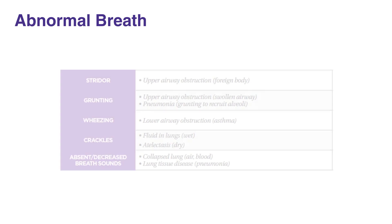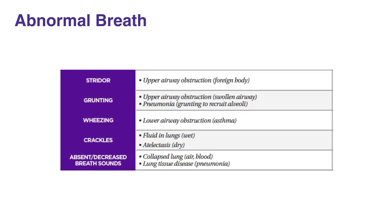In some instances, breath sounds can provide information about the source of the breathing problem. Abnormal breathing sounds include stridor, grunting, wheezing, crackles, and absent or decreased breath sounds. For information on the source of breathing problems associated with each breath sound, consult Table 11 in your corresponding PALS manual.